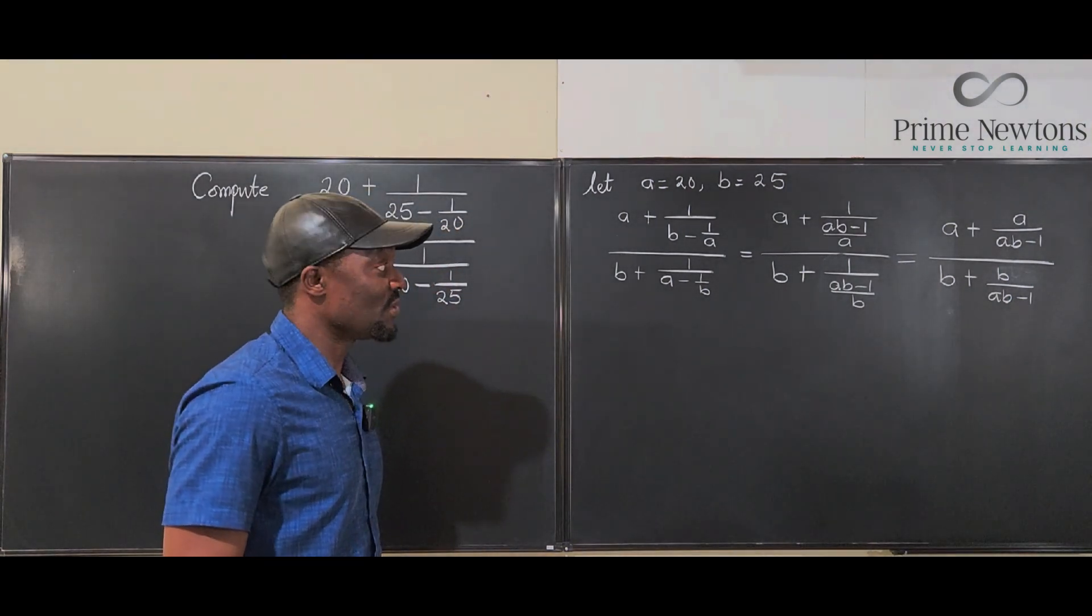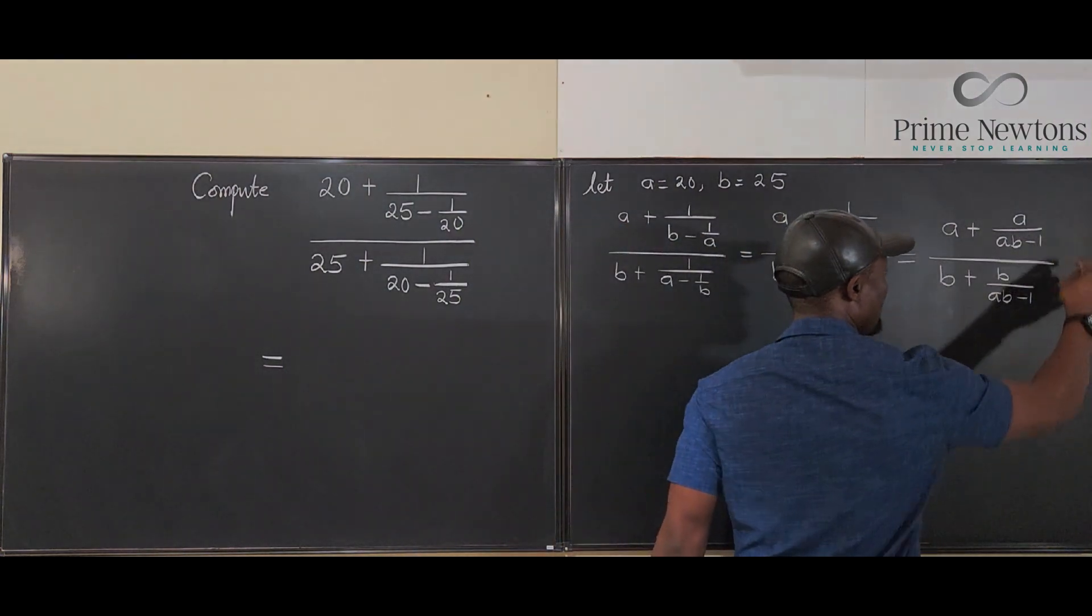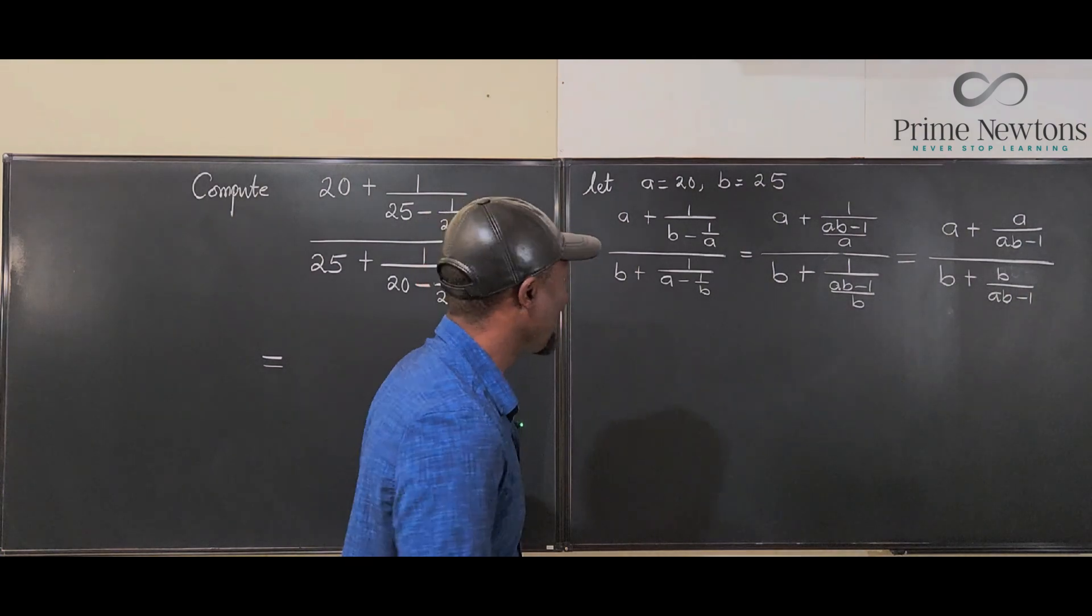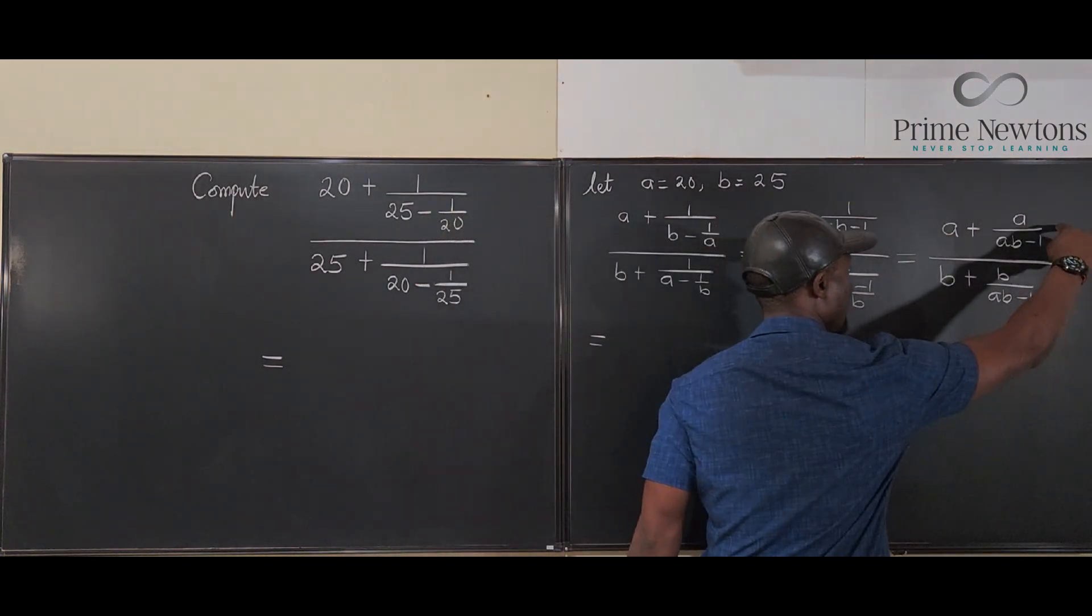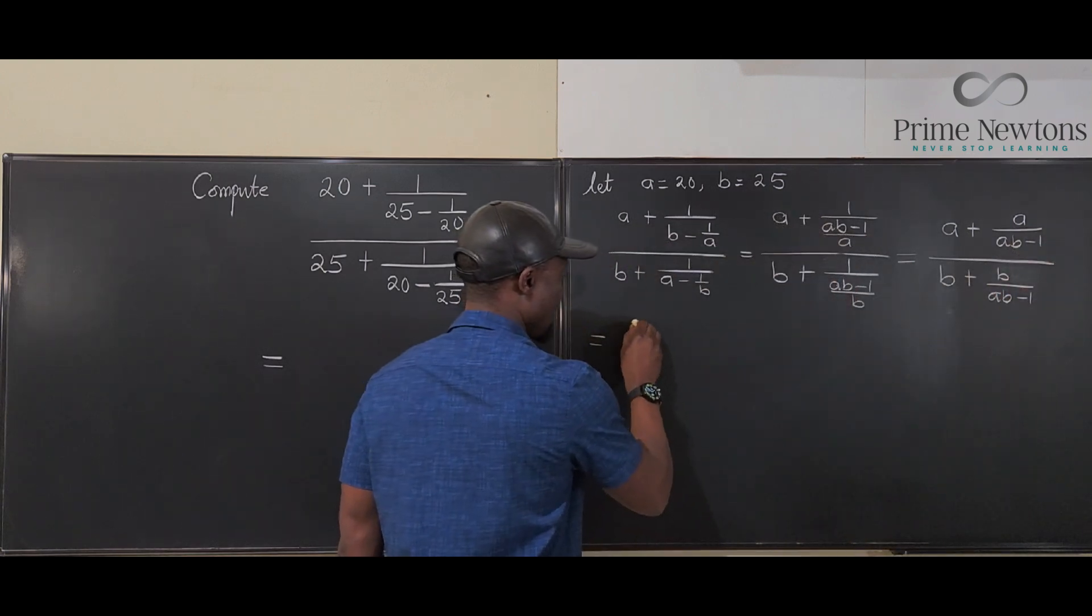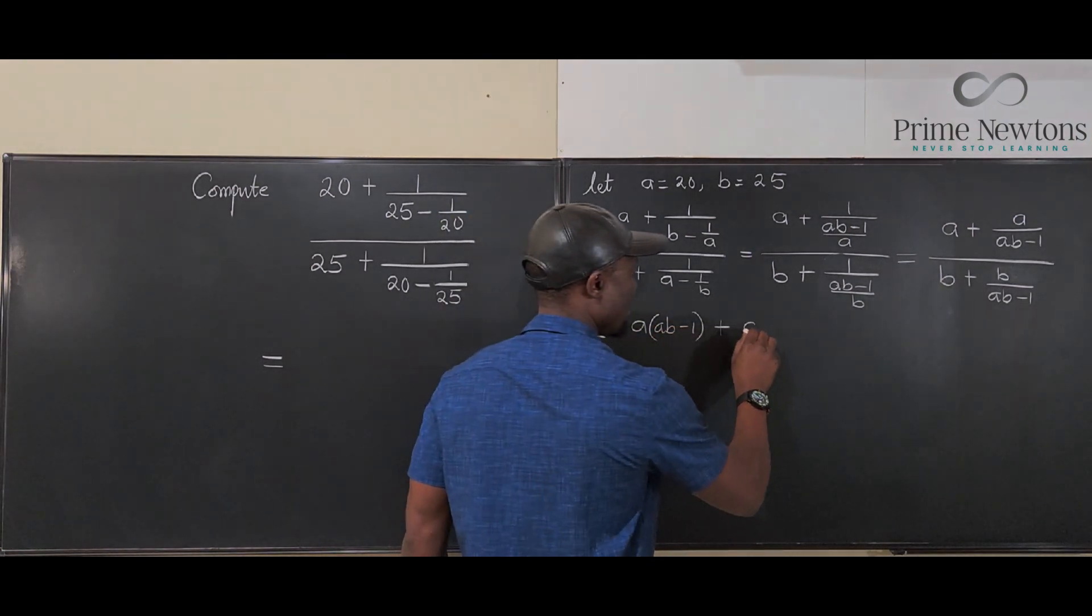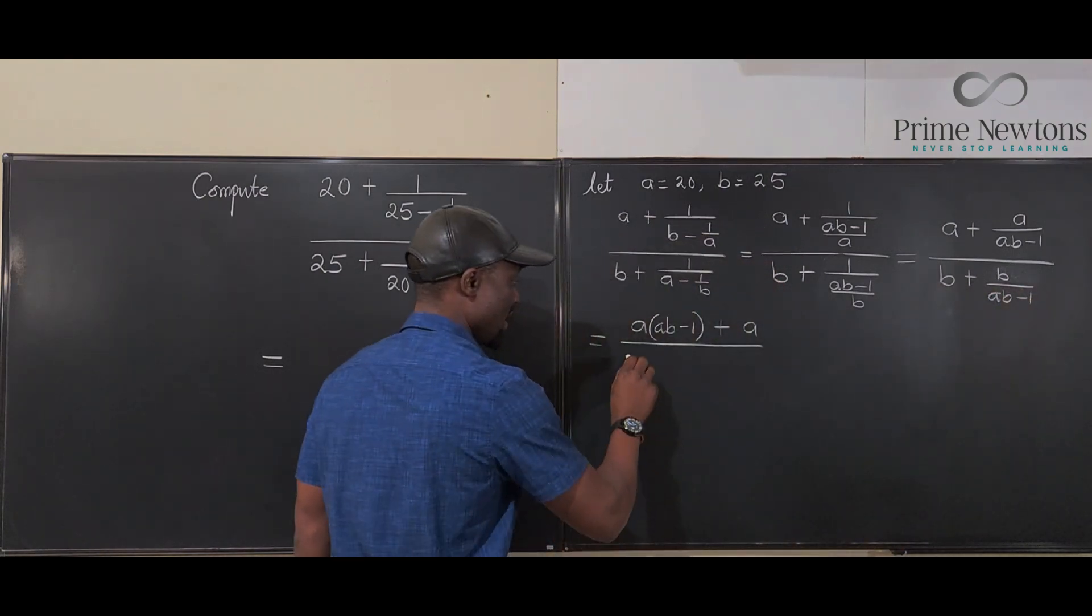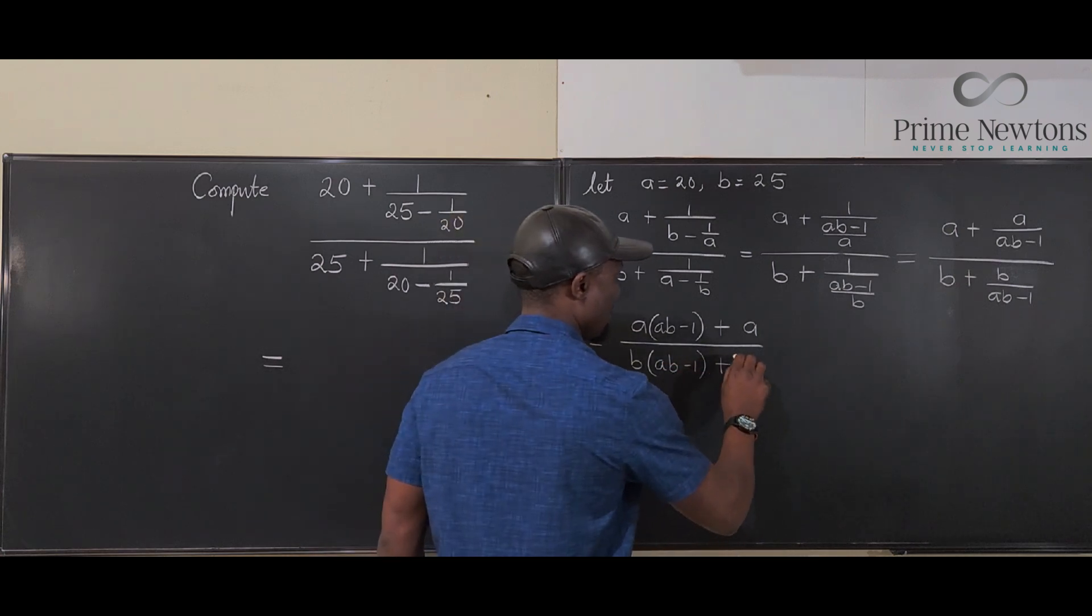This is the most simplified version because all we can do now is to multiply the top and bottom by AB minus 1 and see what we get. It's going to be really simple. If I multiply the top by AB minus 1, I'm going to get A times AB minus 1 plus A divided by B times AB minus 1 plus B.